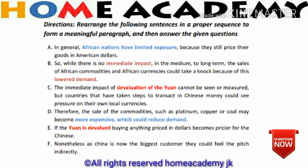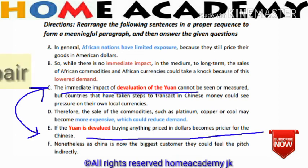Now with sentence E identified as the opening sentence, we find the linked next sentence. Sentence C reads: 'The immediate impact of devaluation of the yuan cannot be seen or measured, but countries that have taken steps to transact in Chinese money could see pressure on their own local currency.' So sentence E and sentence C form a pair — they are linked sentences.